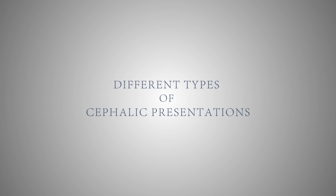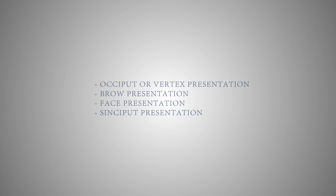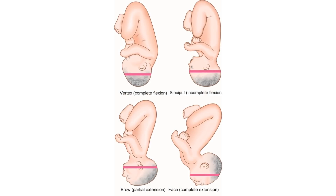Different types of cephalic presentation: depending on the part of the fetal head which presents first in the birth canal, cephalic presentation can be of various types such as occipit or vertex presentation, brow presentation, face presentation, syncipit presentation, etc. The different parts of the fetal head which may appear first at the birth canal depend on the degree of flexion of the fetal head.